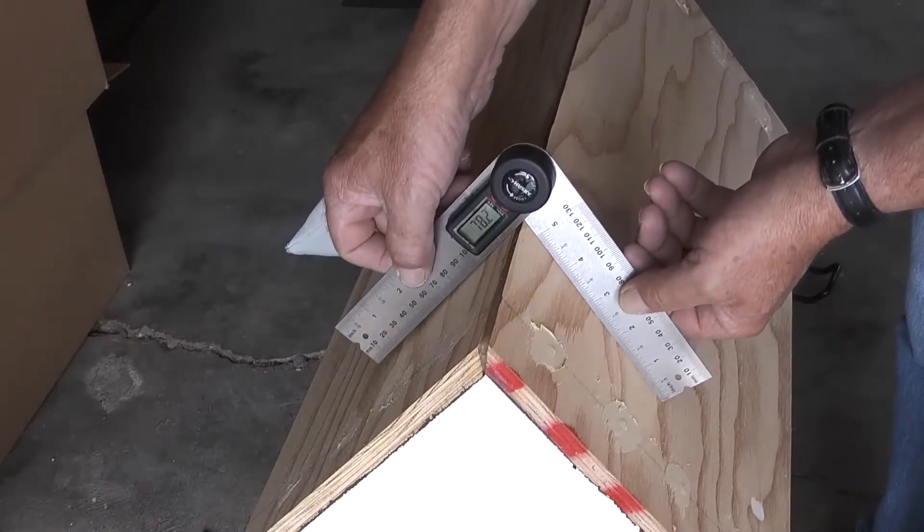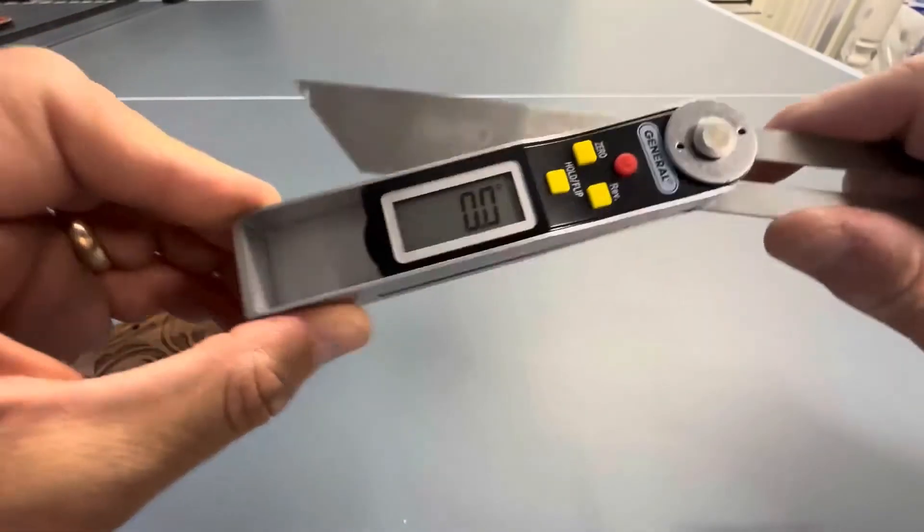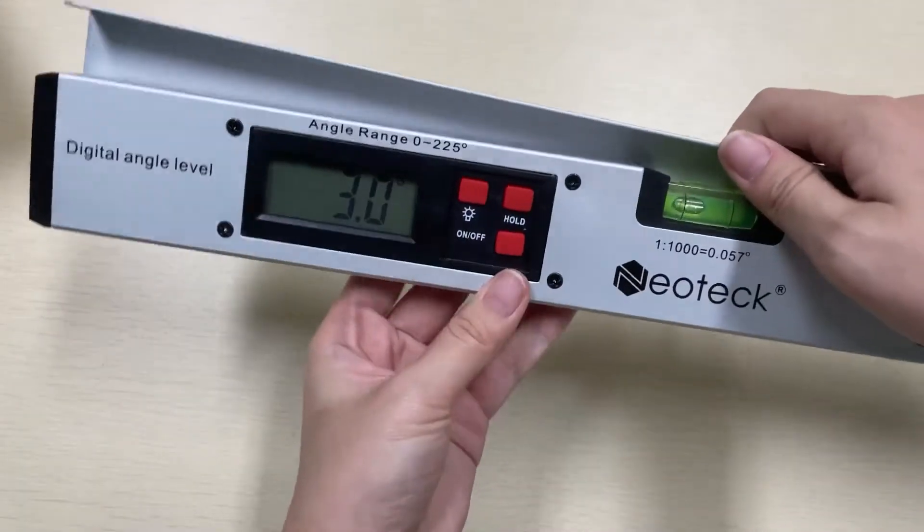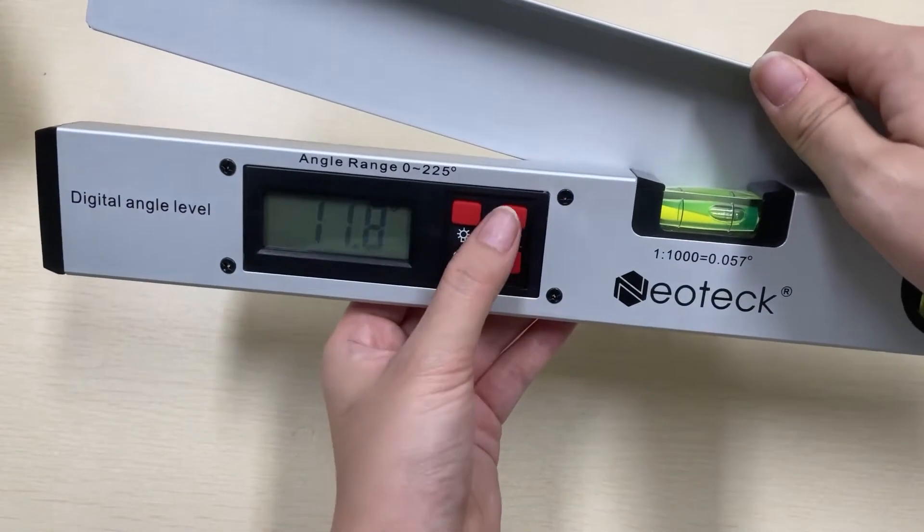A digital protractor is an electronic device that measures angles with absolute accuracy and convenience. This is an intelligent device in the carpentry and woodworking sector.